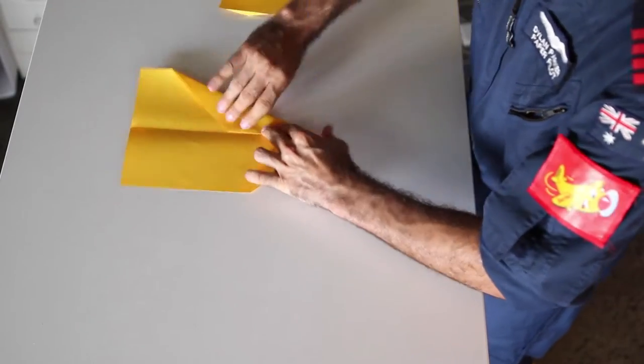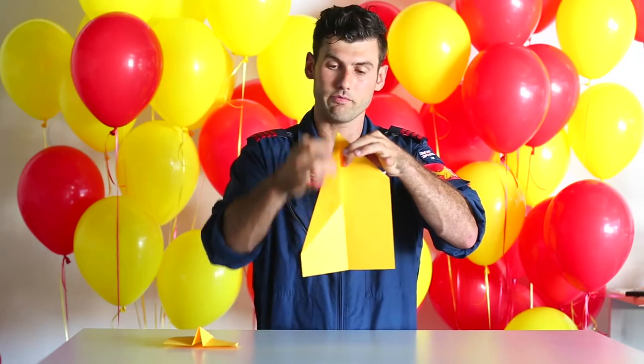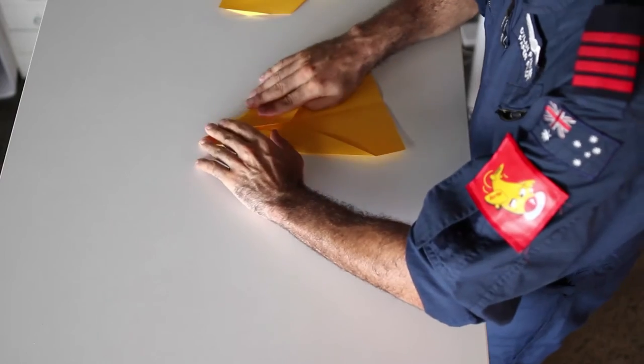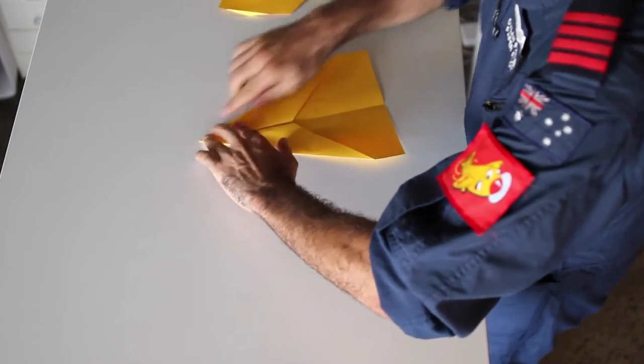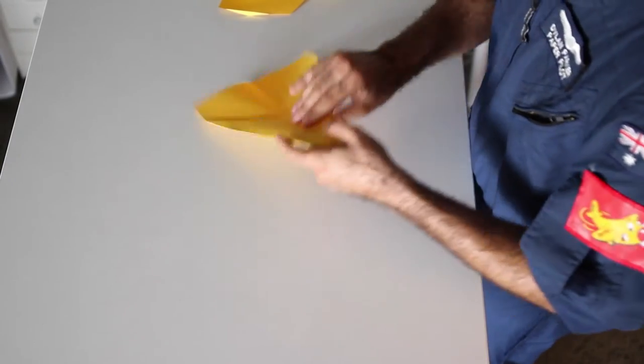Next step is to fold that roof edge into the center of the plane so that it goes up and down the middle. Do that the same on both sides, symmetrical, so that our plane looks a little bit like a rocket, starting to get very pointy.